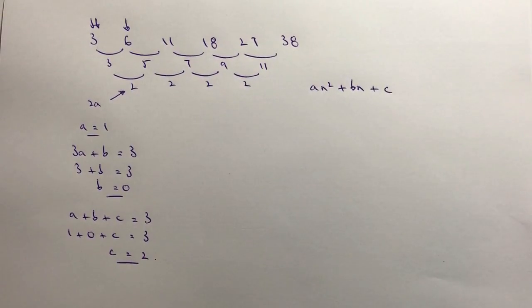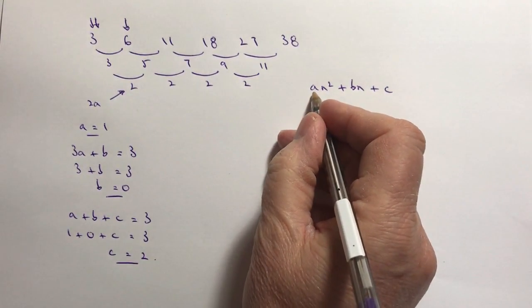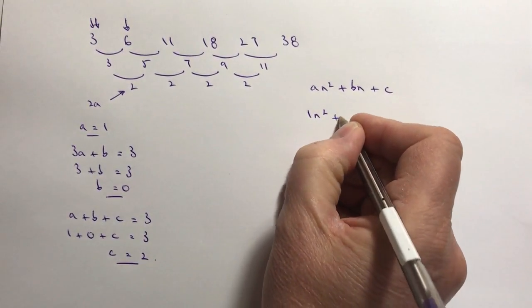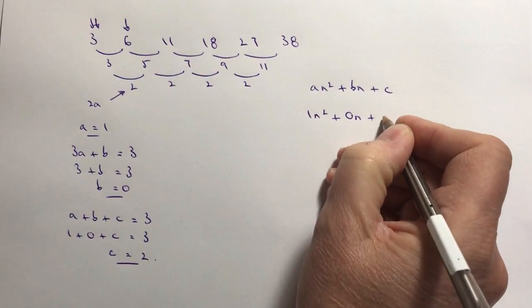And that's actually the answer to this particular sequence, this quadratic sequence. When I put this into here I get a is 1, so that's 1 n squared plus 0 n plus 2.